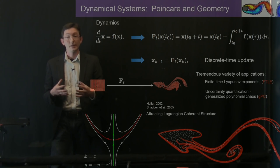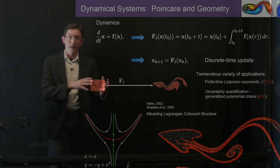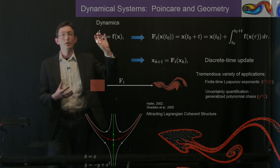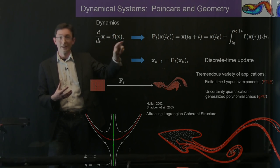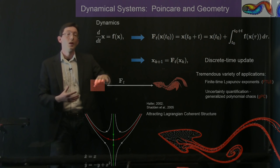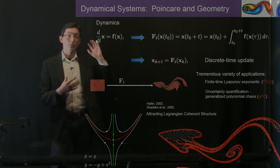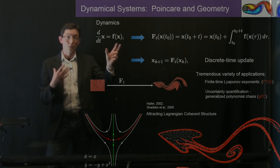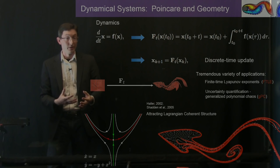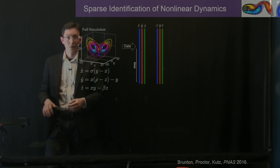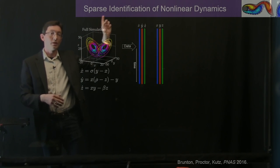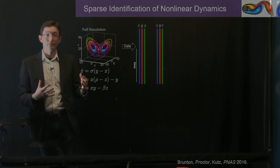But in many physical systems, like in neuroscience or climate science, we don't always have access to exact differential equations describing the system. So what we want to do is discover these dynamics from measurement data, and that's where the sparse identification of nonlinear dynamics algorithm comes in.